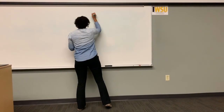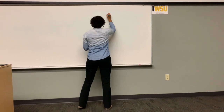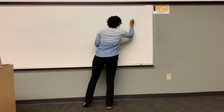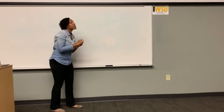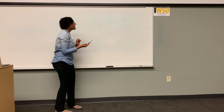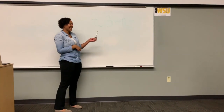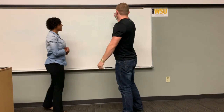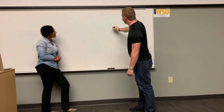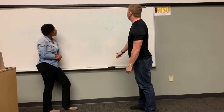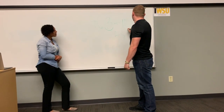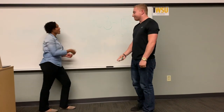Here is another practice problem that we are going to solve. Would anyone like to come up and solve this problem? Tyler, would you like to come up? You go 463 divided by 10, and there is one zero, so you move the decimal one place to the left, which makes that 46.3. Good job, Tyler. Thank you.